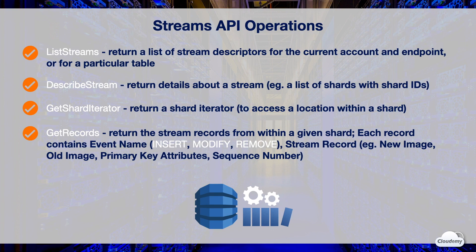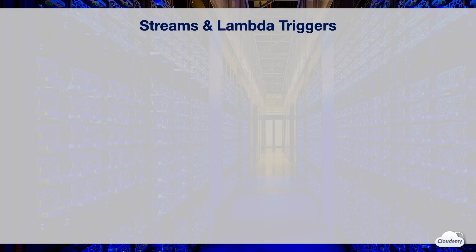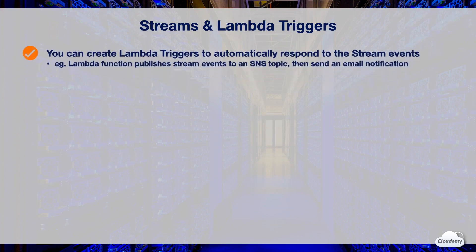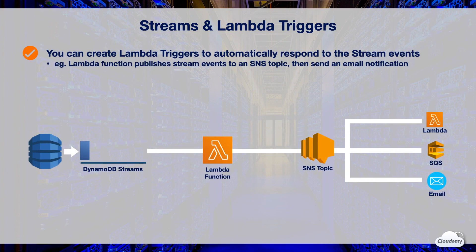DynamoDB Streams is integrated with Lambda. You can enable Lambda triggers to automatically respond to stream events. With Lambda triggers, you can build logic inside a Lambda function to respond to data modifications in DynamoDB, such as publishing stream events to SNS and sending email notifications.